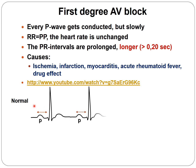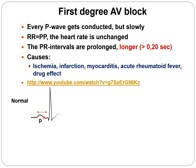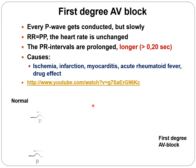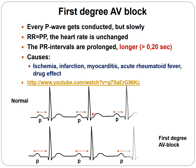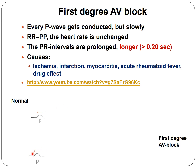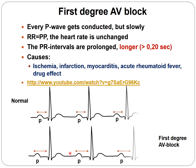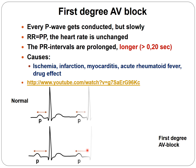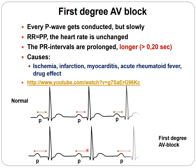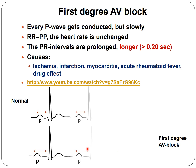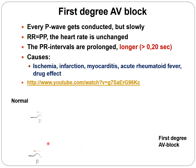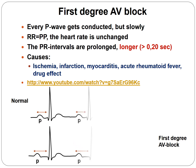When looking at a normal tracing, every QRS is preceded and initiated by a P wave, and the PR is constant and the RR is constant. With 1st degree block, the only difference is that the PR interval is longer — nothing else changes. If you do not have a normal path for comparison, you won't see any differences.